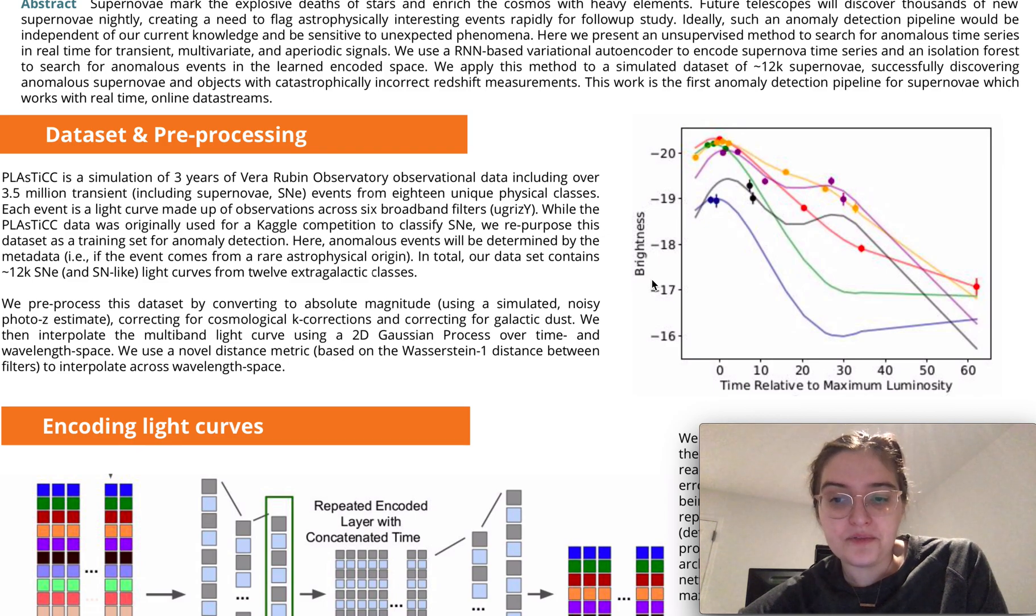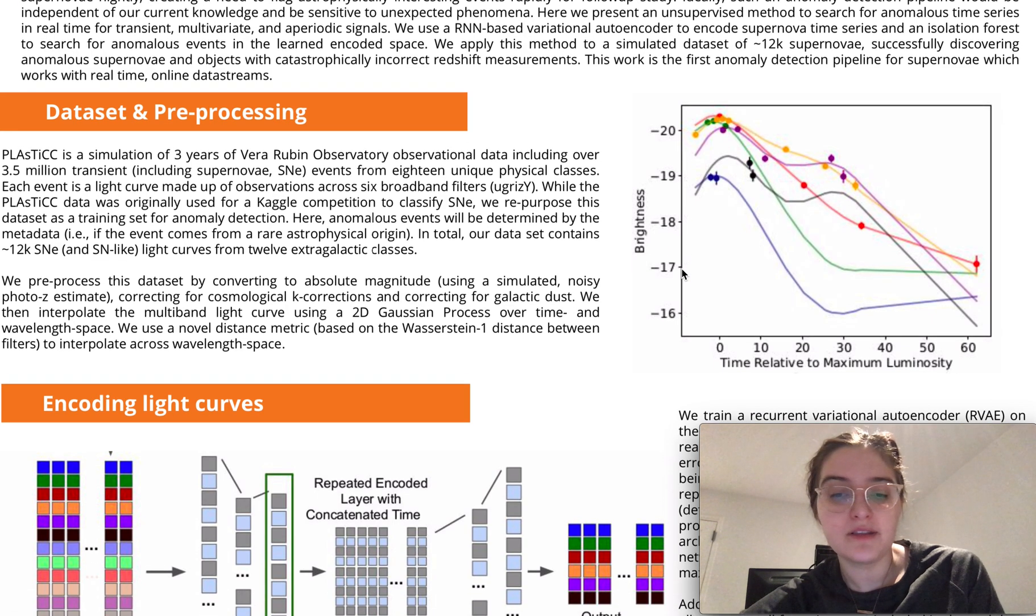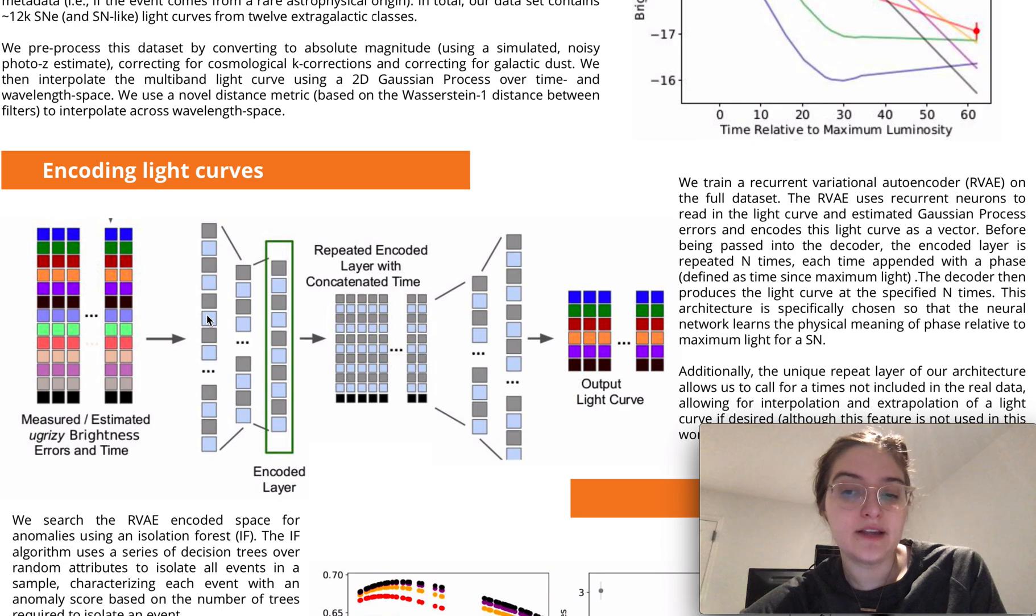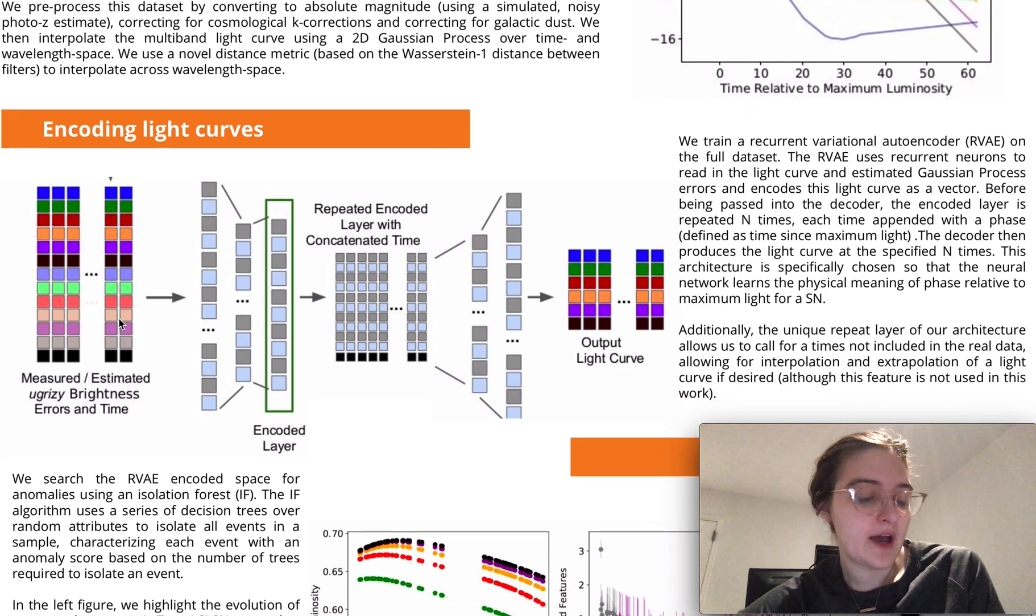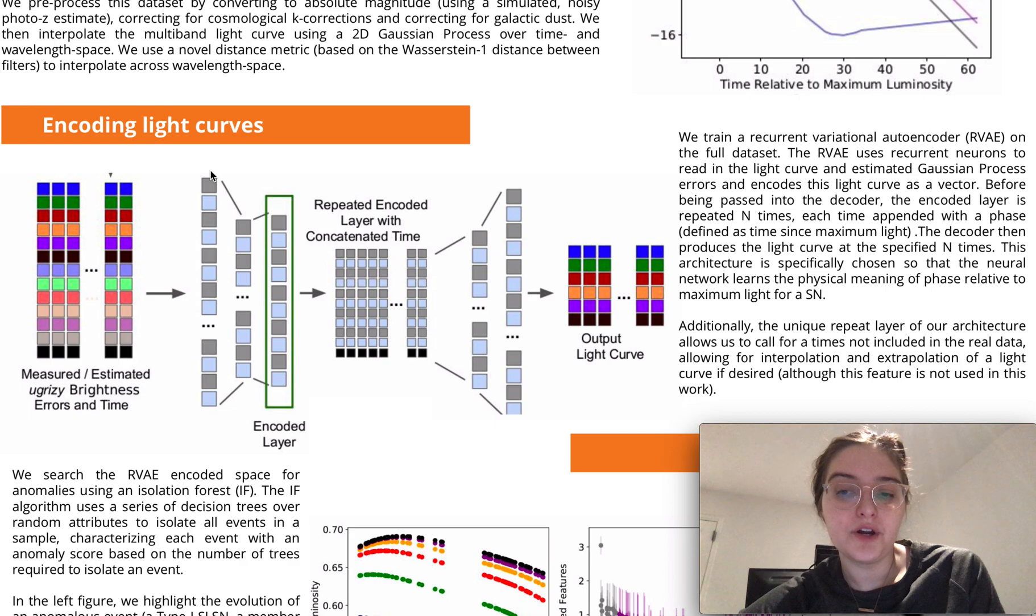So very briefly first I'll tell you how the pipeline works. We interpolate our data using a Gaussian process which interpolates over time and wavelength space. Once we have that nice newly gridded data we pass that through a recurrent variational autoencoder where the recurrent neurons allow us to have arbitrary time scales, and then what we do with this autoencoder is we will look at the encoded space for anomalous events. In particular we use an isolation forest.